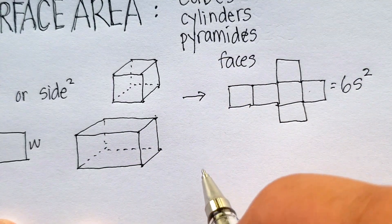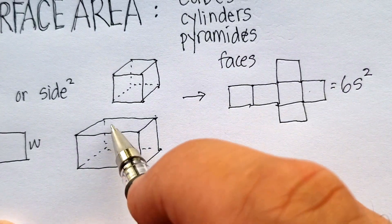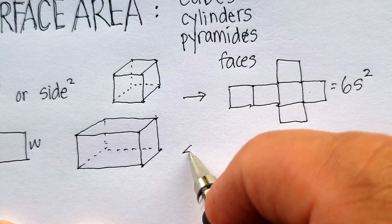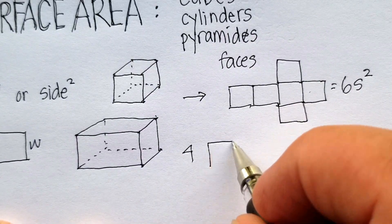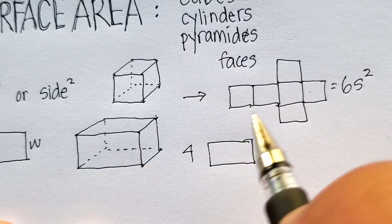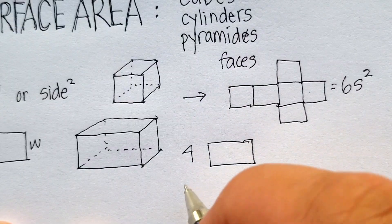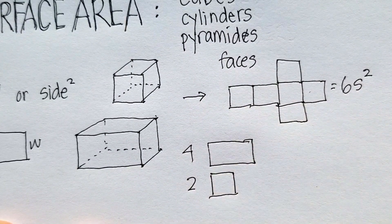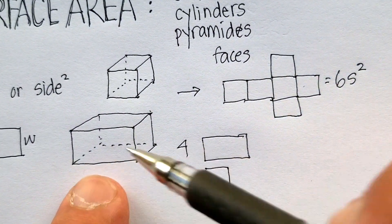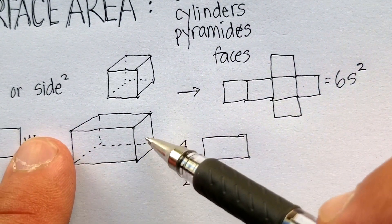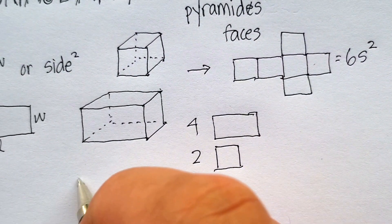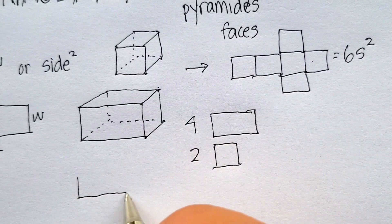you would see that there are one, two, three, four faces that are rectangles. On either end, you would have two of a different shape. So you just find the area of one, multiply it by four, find the area of one of the sides, multiply it by two.